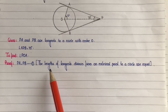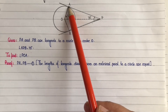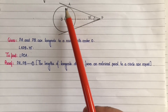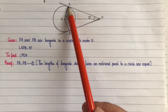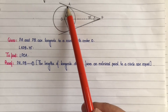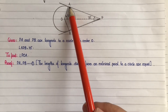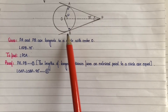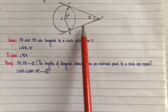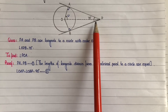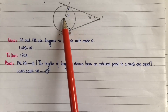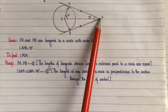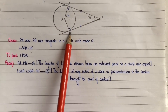Applying the second theorem: OA is the radius of the circle and PA is the tangent at point of contact A. As per the theorem, OA is perpendicular to PA, so angle OAP equals 90 degrees. Similarly, OB is perpendicular to PB, so angle OBP is equal to 90 degrees. Reason: the tangent at any point of a circle is perpendicular to the radius through the point of contact.